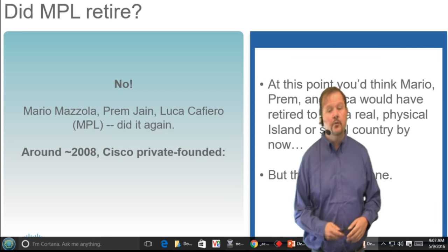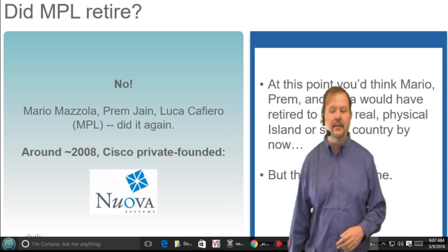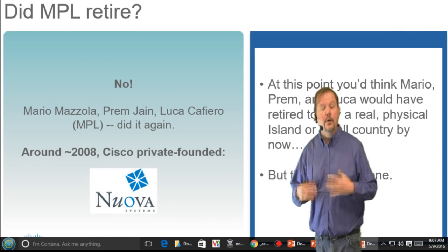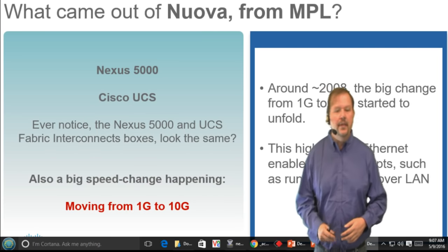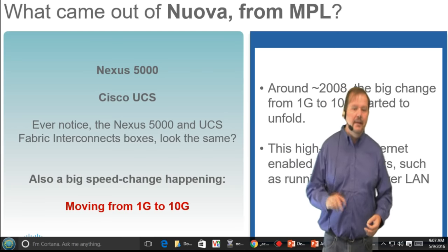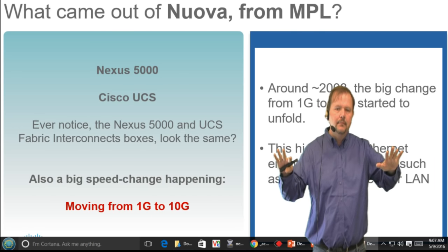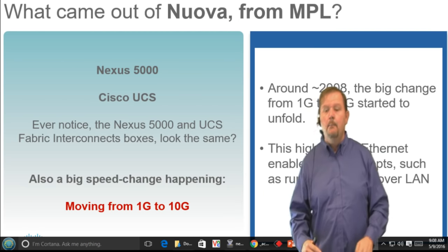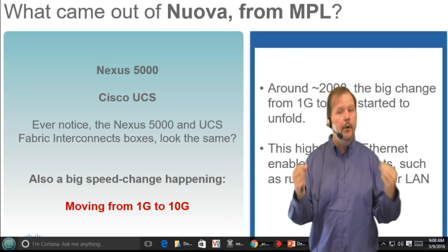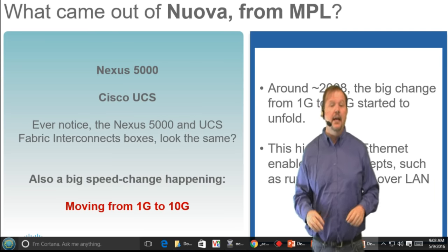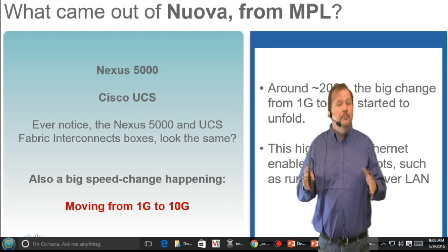Around 2008, Cisco created another company called Nuova as part of the California Project. Nuova was huge. A couple of different products came out of Nuova: the Nexus 5000 and the Cisco UCS. Have you ever seen a Nexus 5000 and compared it to a Cisco Fabric Interconnect? They're a different color, but it is the same platform — built with different purposes. Same platform, different purposes.